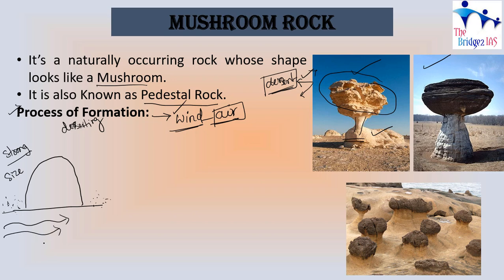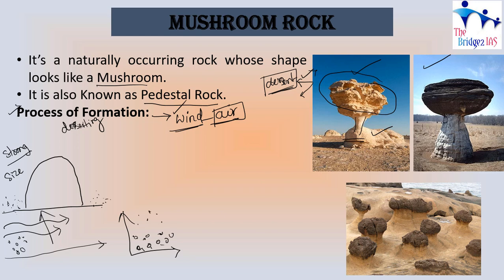When the wind blows in a given direction it brings sand grains along with it. Depending upon the size of the sand grain, the bigger sand grains will be at the bottom near the surface of the land, and the smaller ones will be at a slightly higher height. So the bigger grains are at the bottom and smaller grains are at the top of the wind movement.